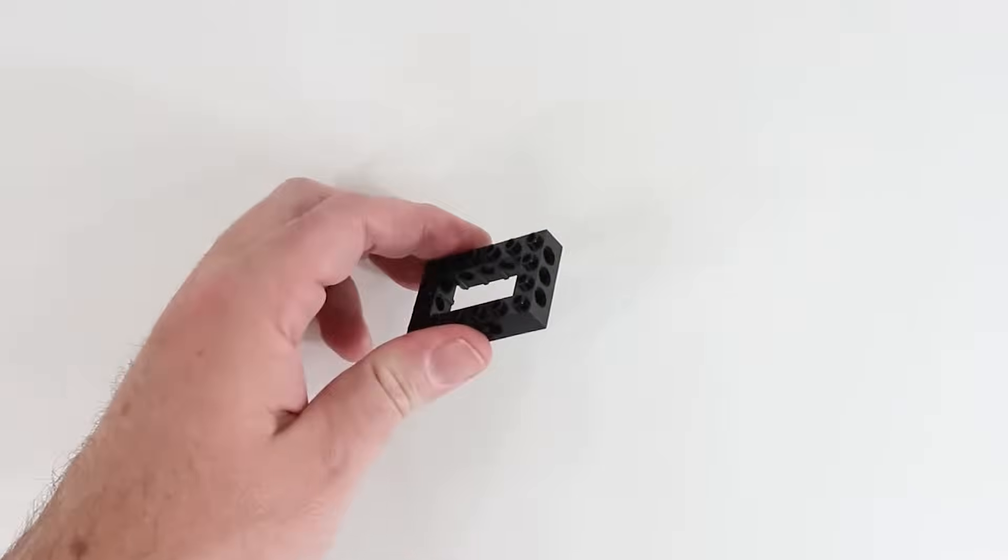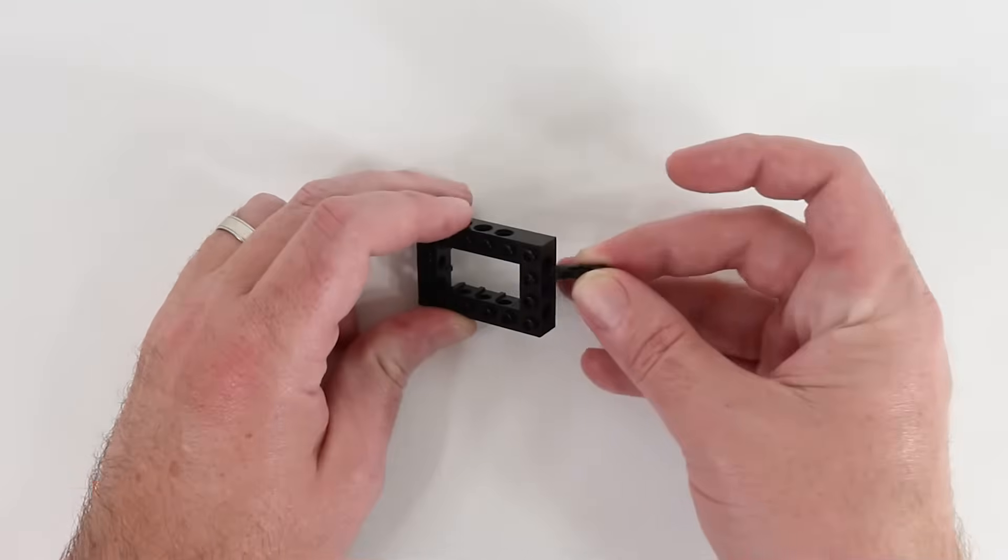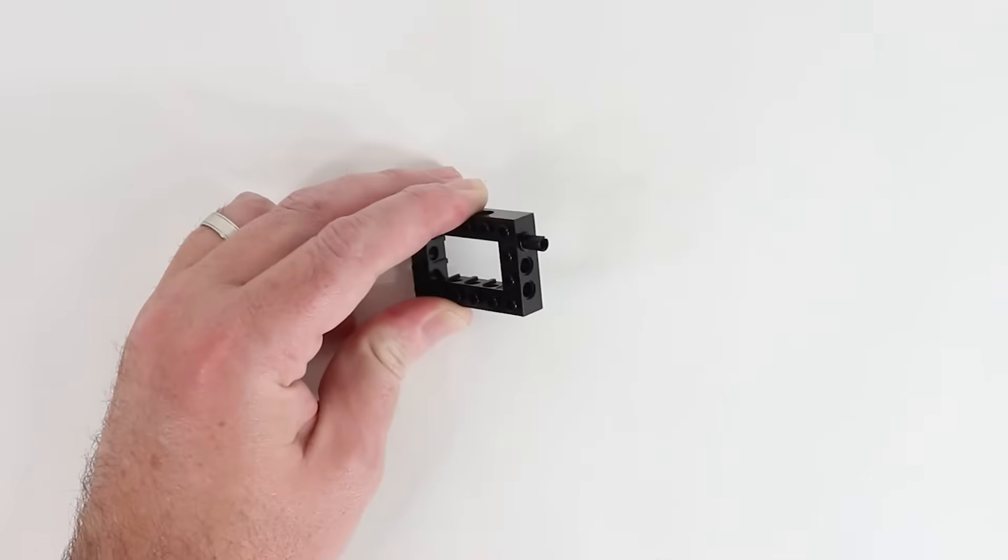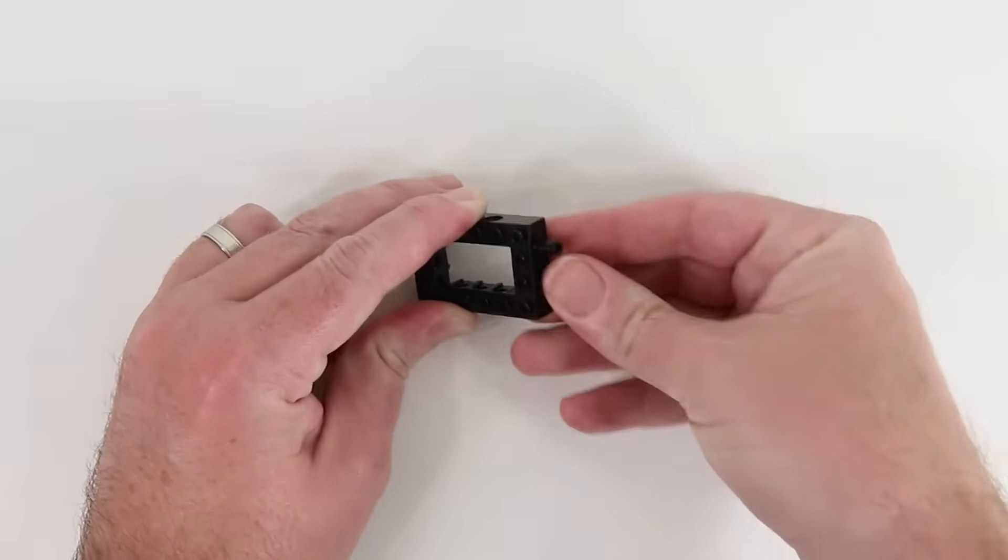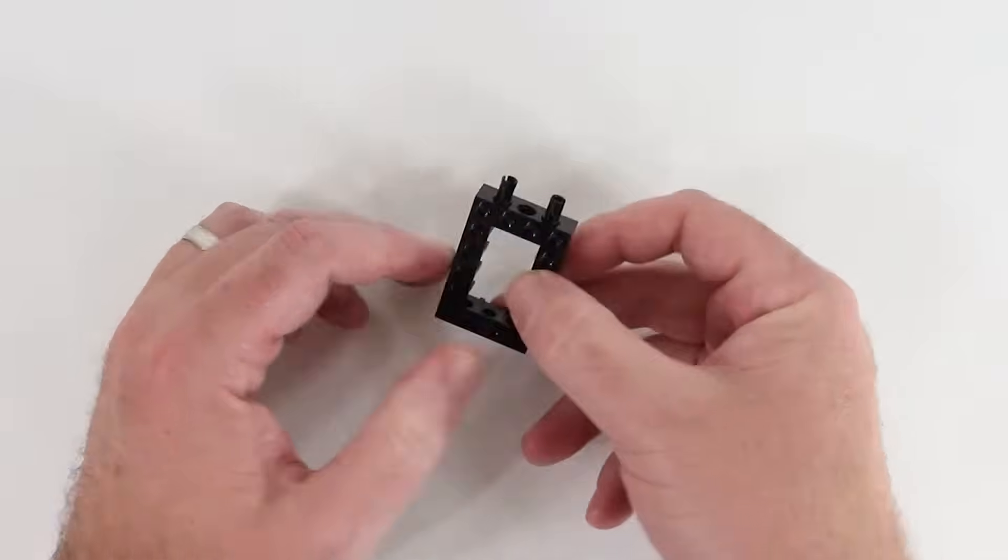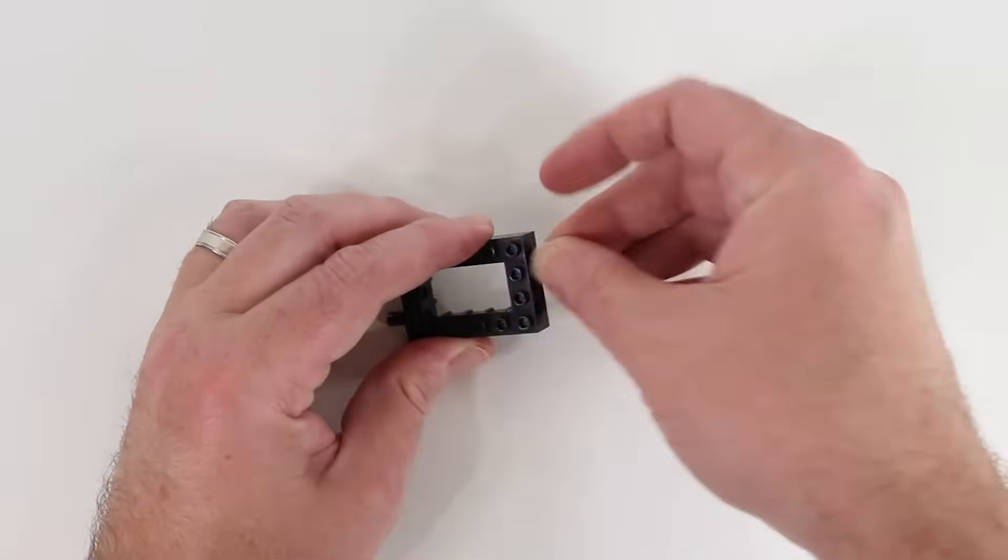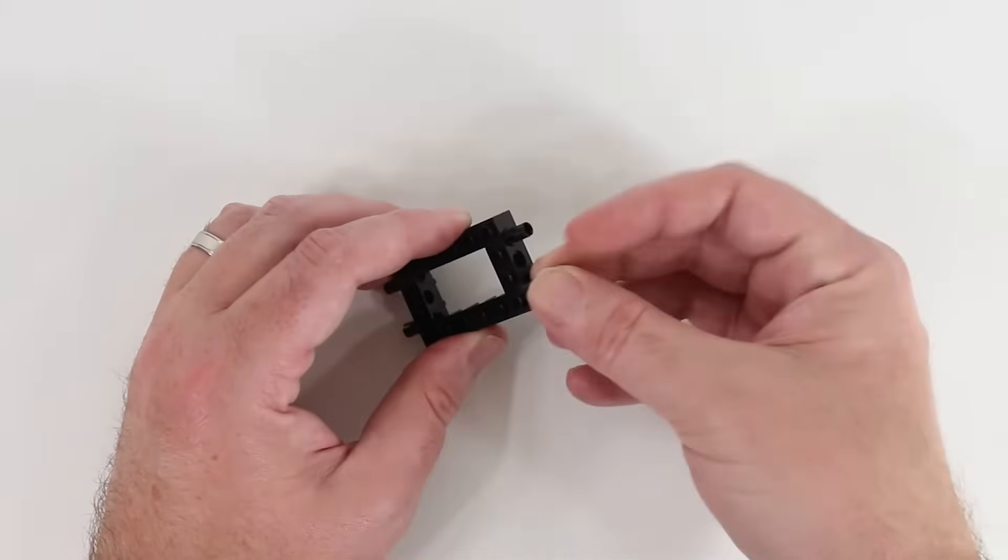The first thing we'll do in assembly is take this 4x6 Technic brick and put two friction pins on each end of each short side. Now we'll set this aside and work on the two sides of the vehicle.